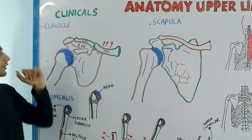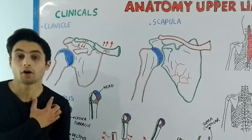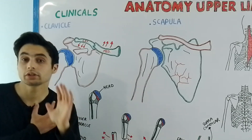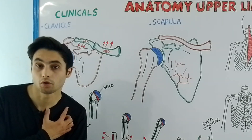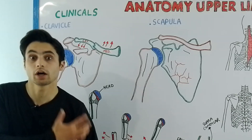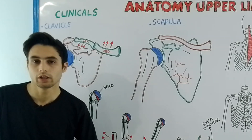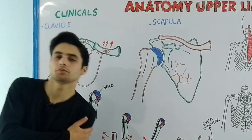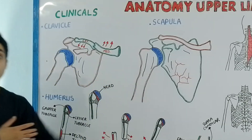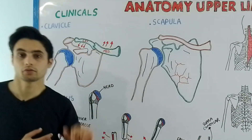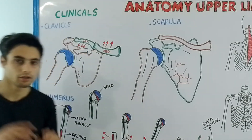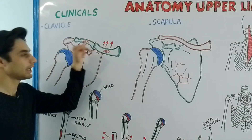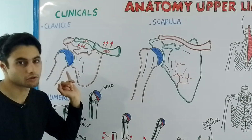The clavicle — your beauty bone or the collar bone — is the most easily exposed bone of your upper limb. It gets easily fractured when a person falls on the shoulder or the outstretched hand. The fracture occurs between the middle and the outer third.